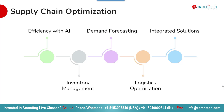SAP Business AI transforms supply chain management by leveraging AI capabilities to optimize various aspects of the supply chain. In inventory management, it enables accurate demand forecasting, ensuring businesses maintain optimal stock levels and avoid stockouts or overstocking. AI-powered logistics optimization streamlines transportation and distribution processes, reducing costs and improving delivery times. SAP Business AI also provides integrated solutions that enhance efficiency across the entire supply chain from procurement to fulfillment, enabling real-time visibility and data-driven decisions.